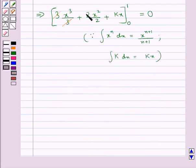Now 3 cancels with 3, 2 cancels with 2, and so we get x cubed plus x squared plus kx, with the limits from 0 to 1, equal to 0.